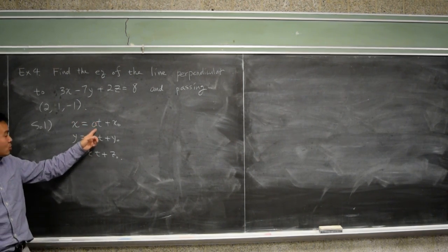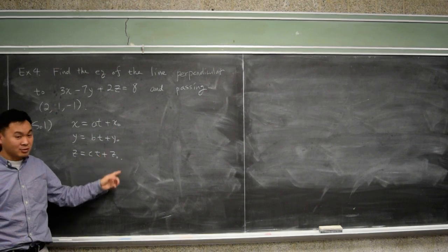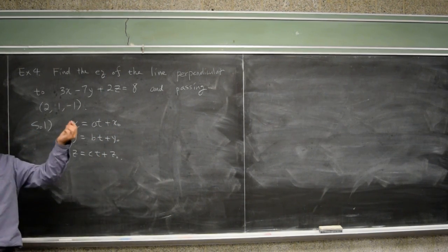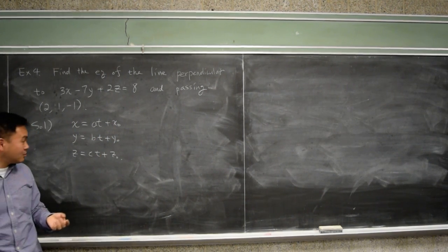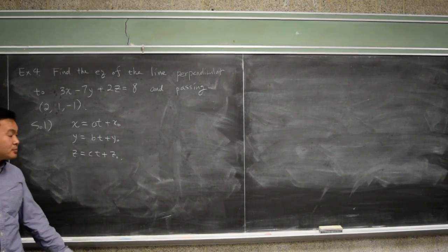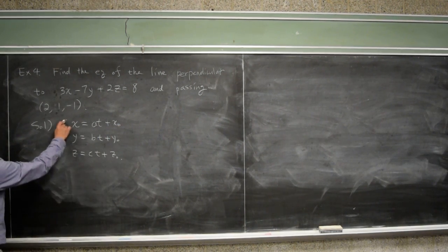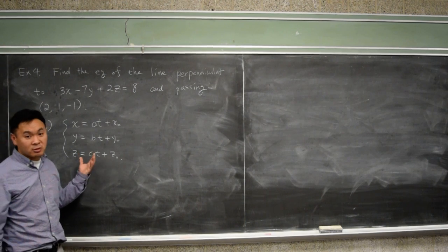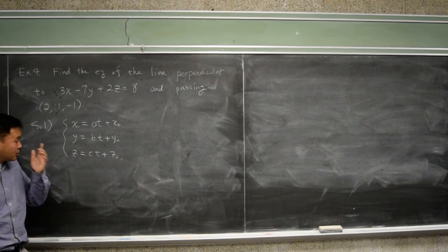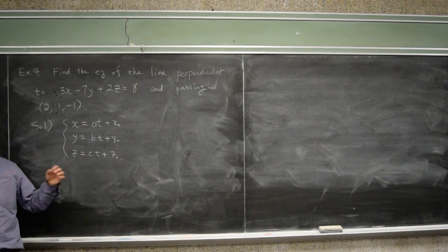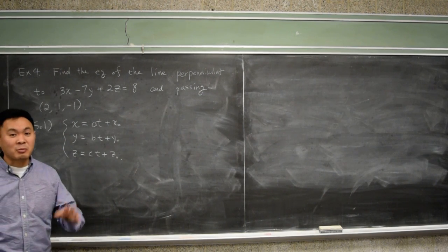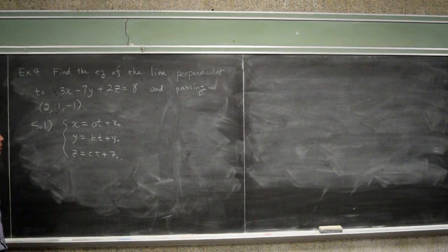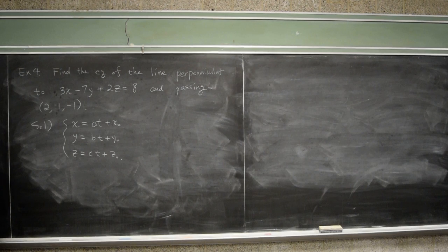If you set T equal to zero, you get X naught, Y naught, Z naught, which means that's the initial point where the trajectory begins, or it's just the point of the line. So it's good to have both the physical interpretation of this formula along with the geometric meaning because it helps to remember the exact formula that way. So that's the formula for the line.